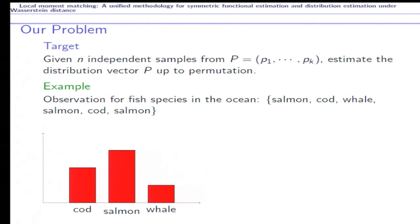For example, suppose we catch fish in the ocean. Assume that our observation for fish species is salmon, cod, whale, salmon, cod, salmon. The traditional problem is to estimate the population frequencies of all fish species, and finally we will arrive at a histogram something like that.